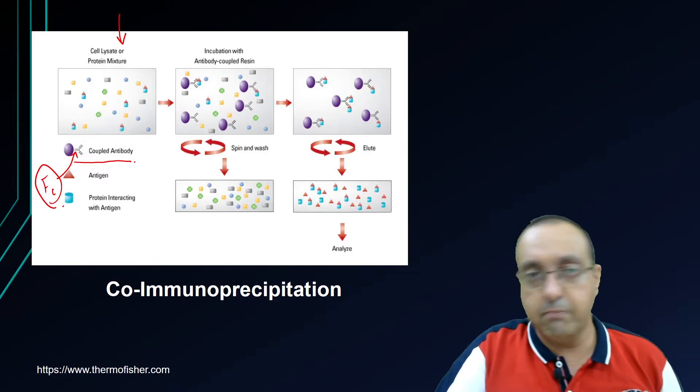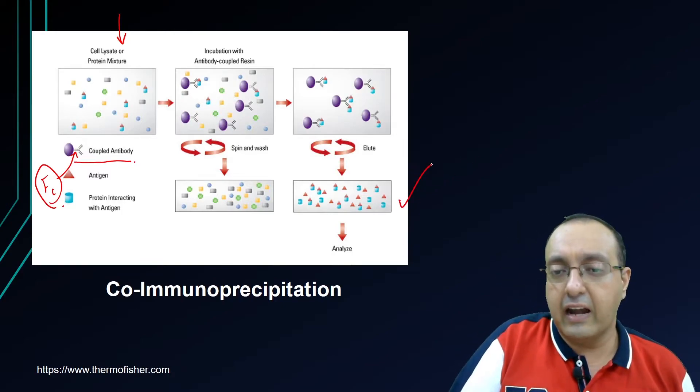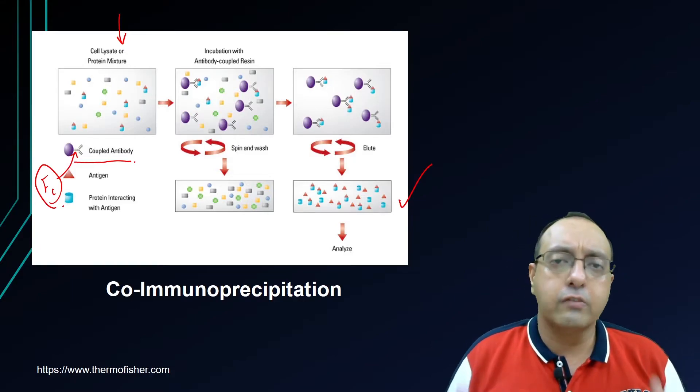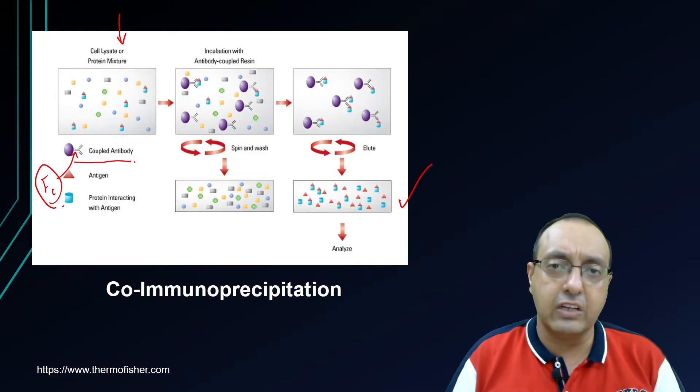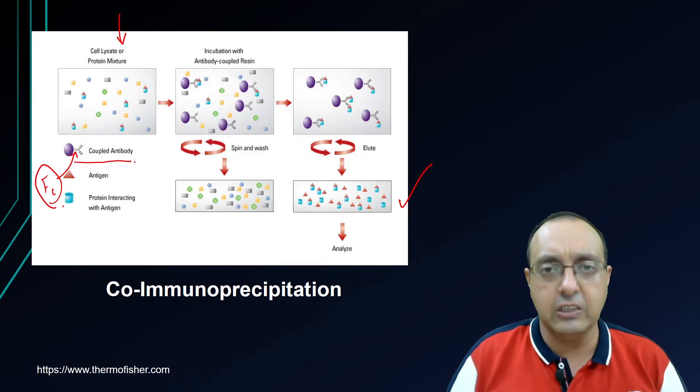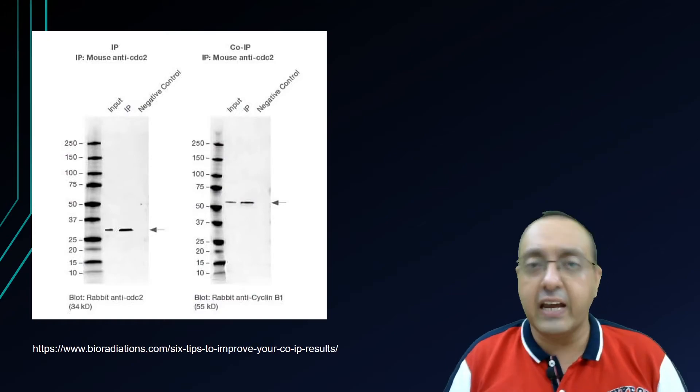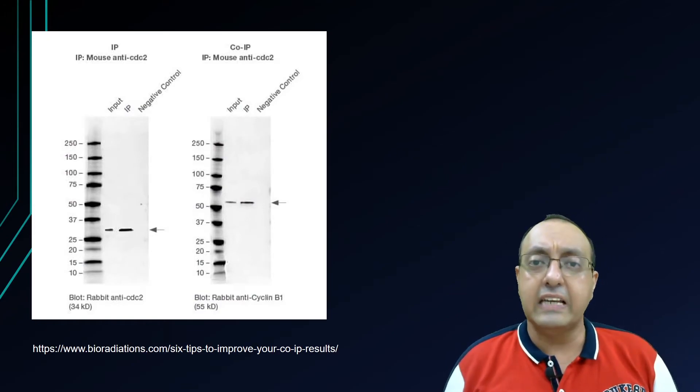So this is the basic idea behind co-immunoprecipitation. You can analyze this protein complex very easily. This has led to a lot of discoveries about involvement of different proteins in the same pathway, identification of various protein partners working in the same pathway or biological process. It has been immensely useful because of its versatility and ease of use. Here is a very good example of IP and co-IP side by side, so you can see and compare how these techniques actually work.